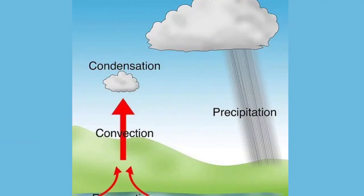As the air rises, it expands, loses heat, and cools down. As a result, condensation takes place, leading to the formation of cumulus clouds. Heavy rainfall takes place, accompanied by thunder and lightning. Such type of rainfall is common in the summer season, in the equatorial regions, and also in the interior part of the continents.